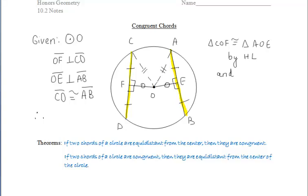And then by CPCTC, we can say that segments OF and OE are congruent, which therefore gives us the fact that the two chords are equidistant from the center because those two segments OF and OE are congruent.